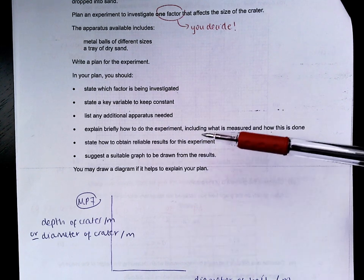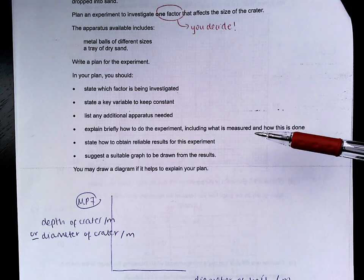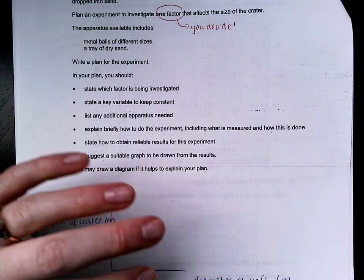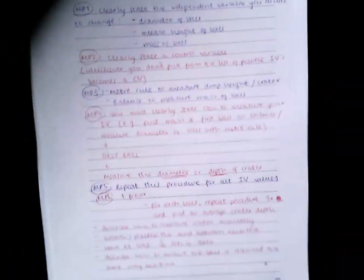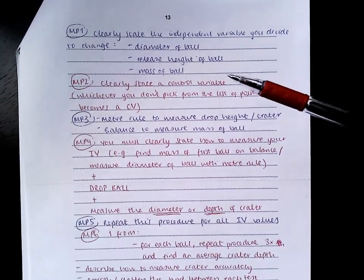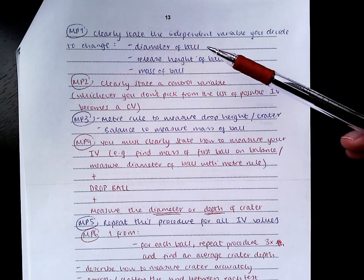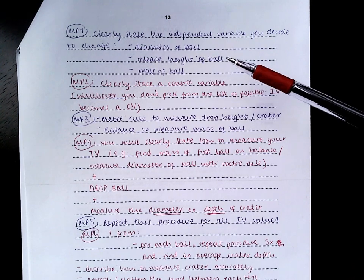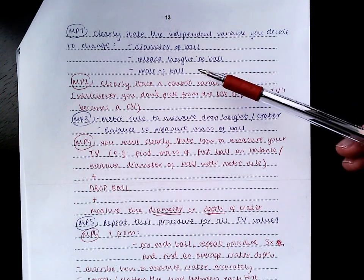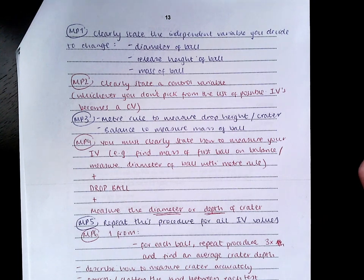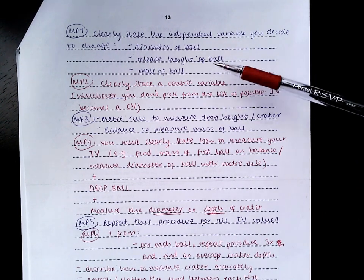I've told you the things that you need to include. You tell me which factor is being investigated. You can't just say the size of the ball. You need to be specific. For mark point one, you needed to clearly state what you were deciding to change. You might have had metal balls with different diameter. You might have dropped the ball from different heights. You might have changed the mass of the ball. You cannot just say change the size of the ball. No one can follow that and know exactly what you mean. That's too vague. You need to specify very clearly which one you're changing.